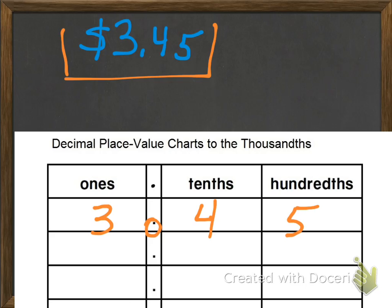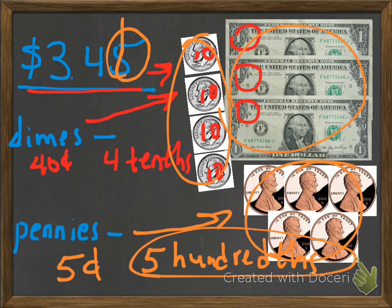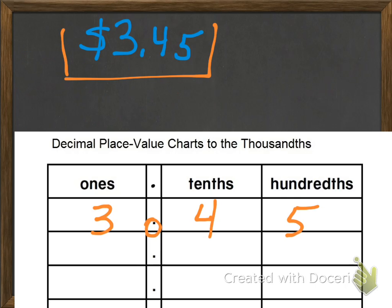Just like our picture here, we have our 3 whole dollars, we have our 4 tenths — 40 cents — and our 5 pennies, 5 cents, which is the 5 hundredths. So it's 3 ones, 4 tenths, and 5 hundredths: 3 dollars and 45 cents.